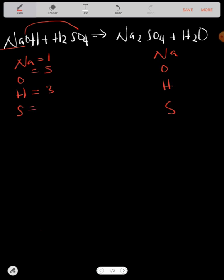On the right side, sodium we have two. Oxygen, we have four plus one which is five. Hydrogen, we have two. Sulfur, we have one.